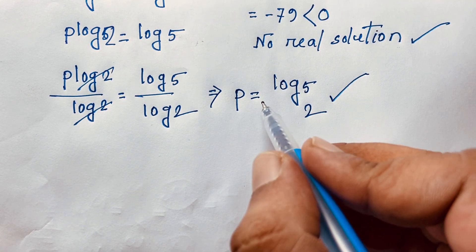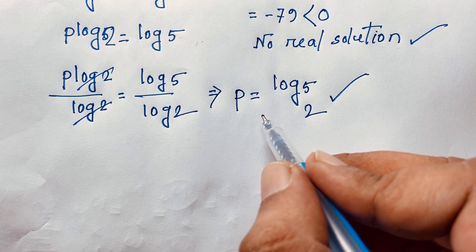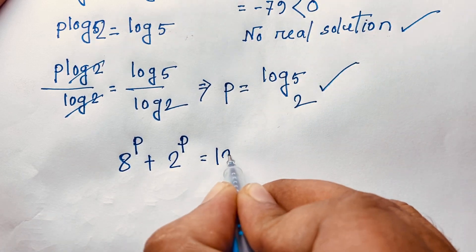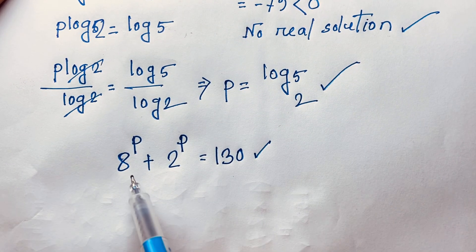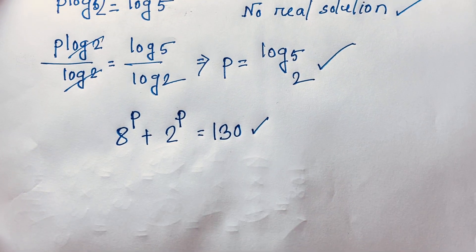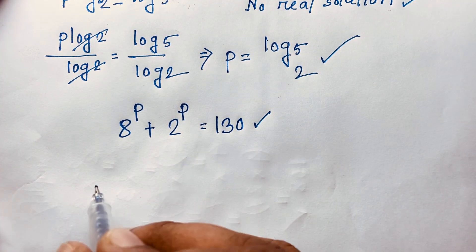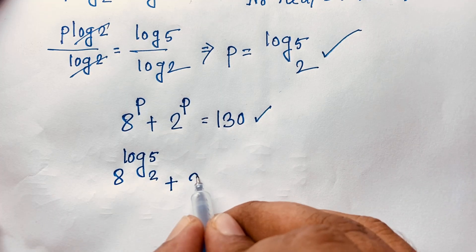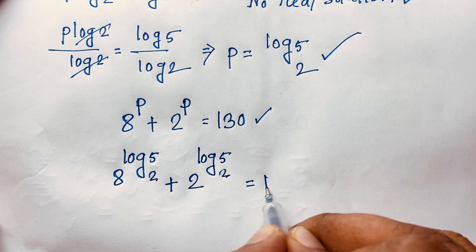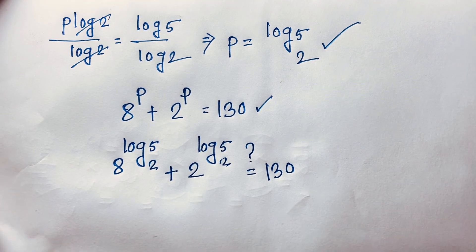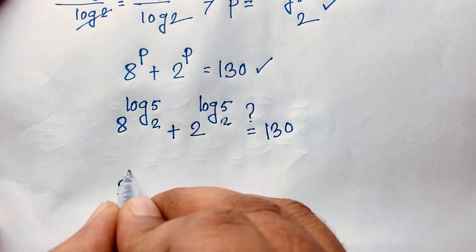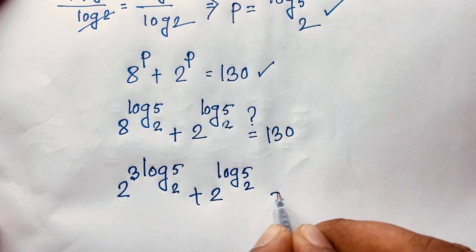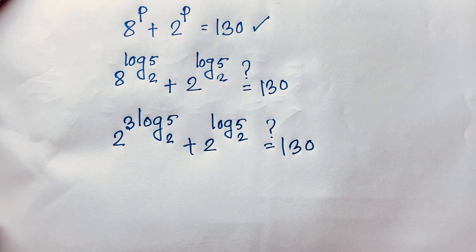Let's verify: our original equation is 8^p + 2^p = 130. Substituting p = log₂5, we get 8^(log₂5) + 2^(log₂5) = 130. Since 8 = 2³, this becomes (2³)^(log₂5) + 2^(log₂5), and moving the exponent 3 gives 2^(3·log₂5) + 2^(log₂5).